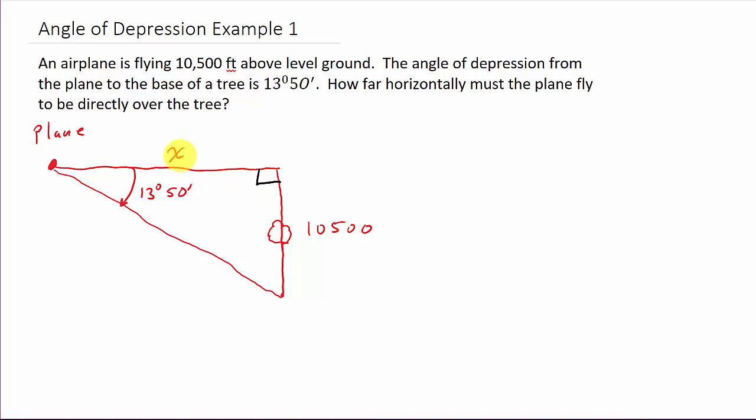Well, what do we know opposite and adjacent? Well, that's tangent. So we've got the tangent of 13 degrees 50 minutes is equal to opposite, which is 10,500 over X, which is the side adjacent.